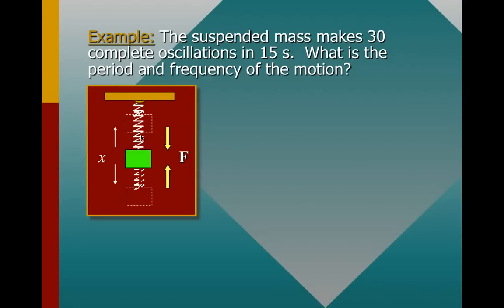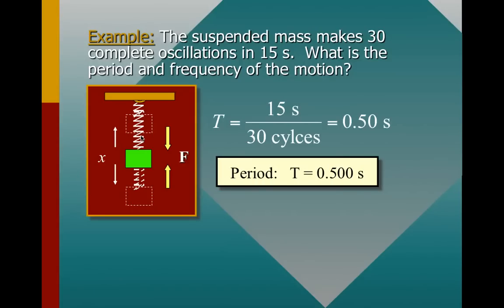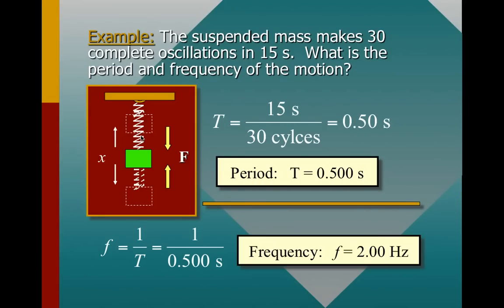If we have an example problem — say we have a suspended mass which makes 30 complete oscillations in 15 seconds — what's the period and the frequency of the motion? Go ahead and pause for just a second and take a look. Our period is 15 seconds for 30 cycles, so our period is equal to 0.5 seconds. And because our frequency is the inverse of that, our frequency is equal to 2 hertz. Remember, frequency and period must be inverses of each other.